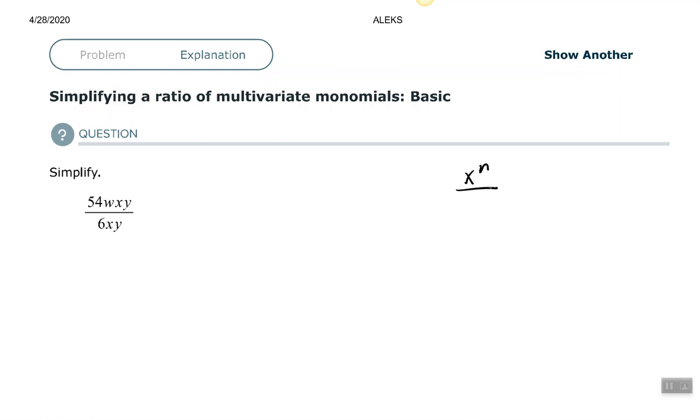It says that if we divide like bases, then to simplify this, we subtract the exponents.